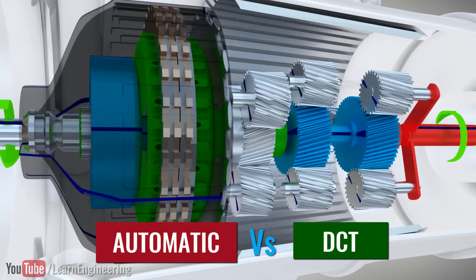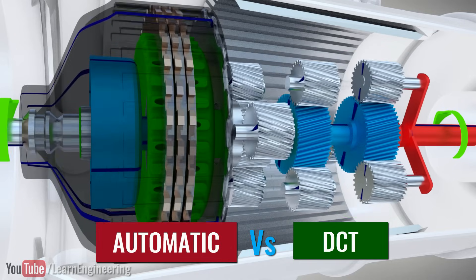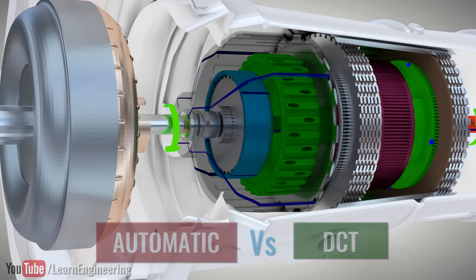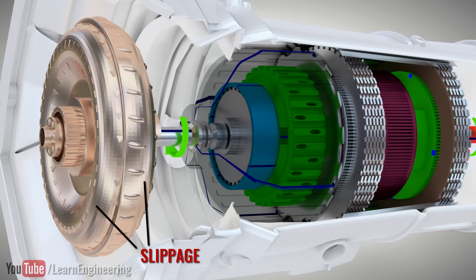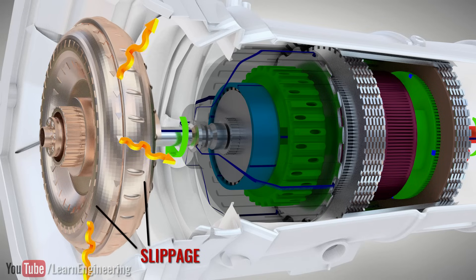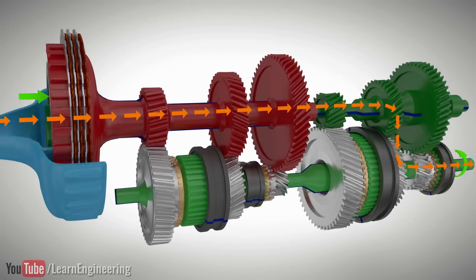Moreover, an automatic transmission requires a torque converter which works via fluid coupling. So whenever there is a speed difference between the input and output side, slippage occurs and the torque converter generates heat. This results in low fuel efficiency. These kinds of problems do not occur in a DCT.